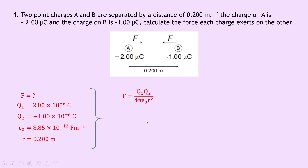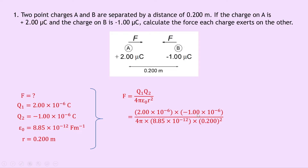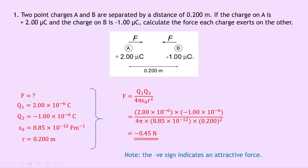Writing down our equation we have F equals Q1 Q2 over 4 pi epsilon naught R squared, and substituting in the numbers gives us 2 times 10 to the minus 6 times minus 1 times 10 to the minus 6 divided by 4 pi times 8.85 times 10 to the minus 12 times 0.2 squared. Plugging all of this into your calculator should give you a final answer of minus 0.45 newtons. Note that the negative sign indicates an attractive force, because we've got a positive charge and a negative charge, so they should want to attract each other.